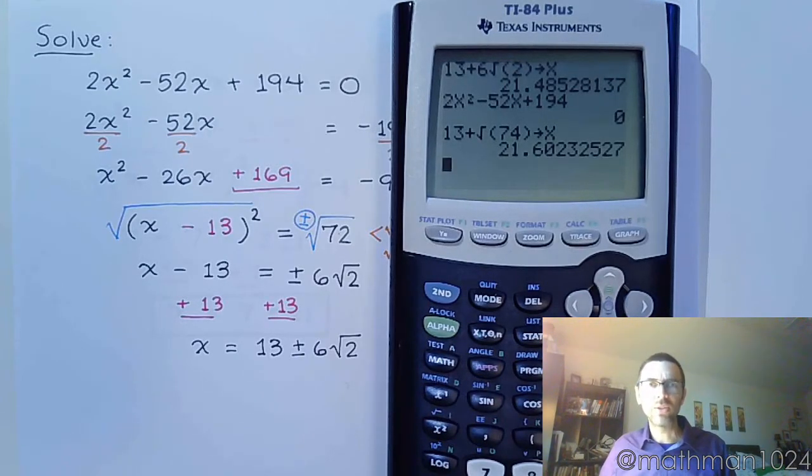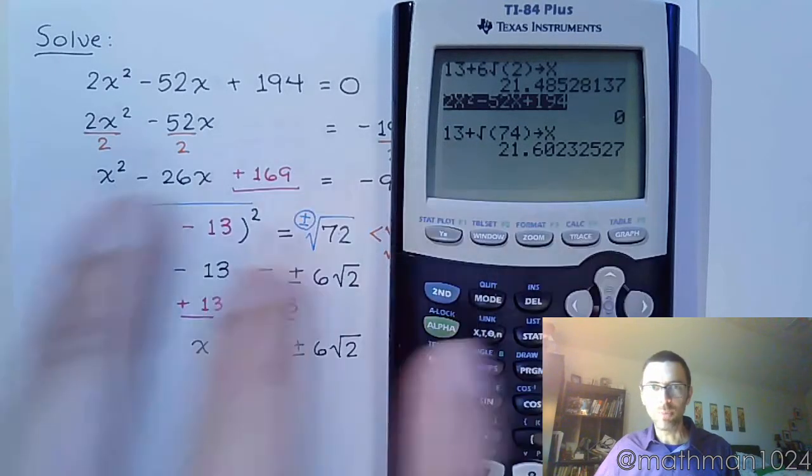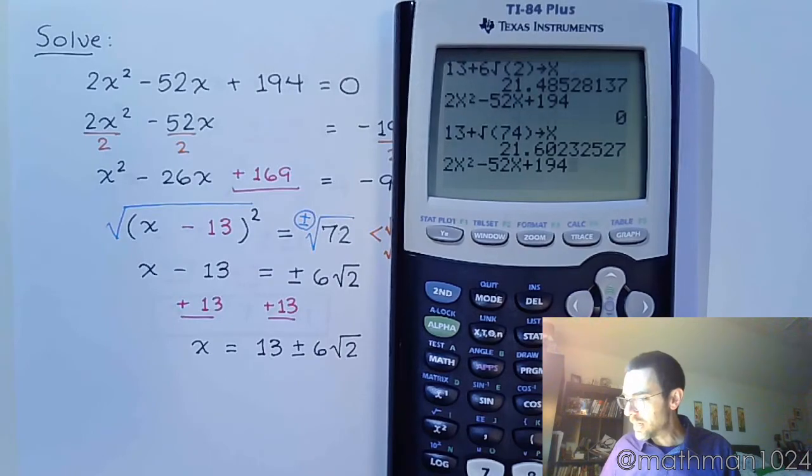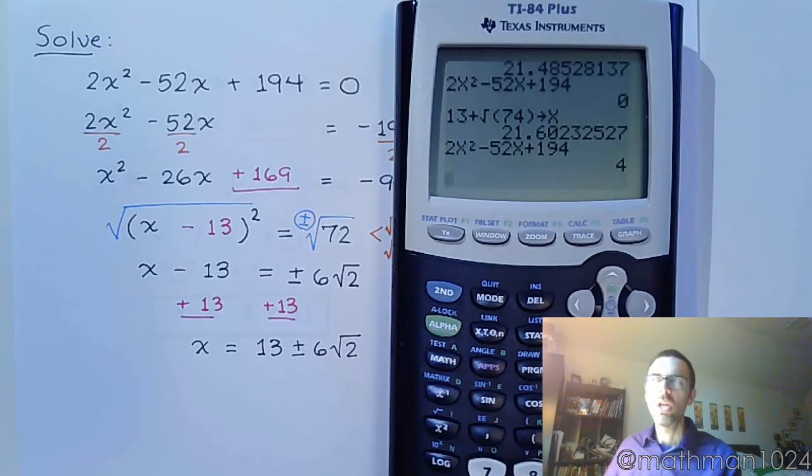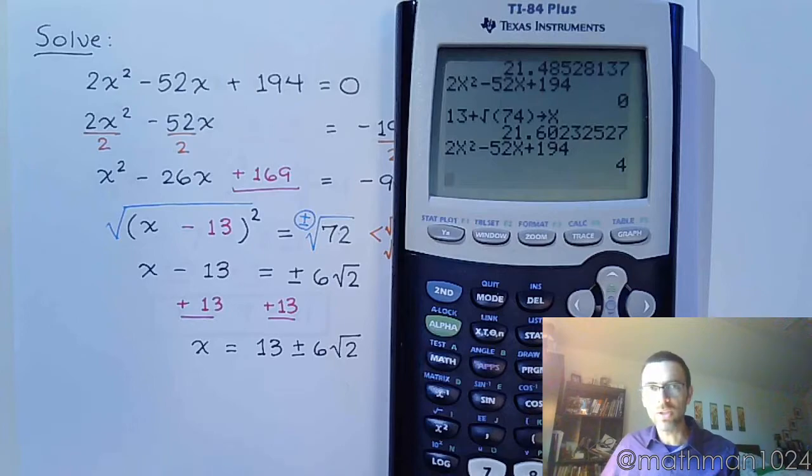And if I type in my original equation, I can use the arrows to go up and grab that. I end up with 4. So, I would have known that my answer was wrong, which would mean I need to go back and figure out where I made the mistake. Sometimes it's an issue with signs or just a simple arithmetic mistake. But this is why we have the calculators to check our work, not to do our work.